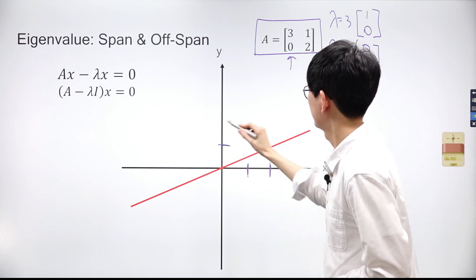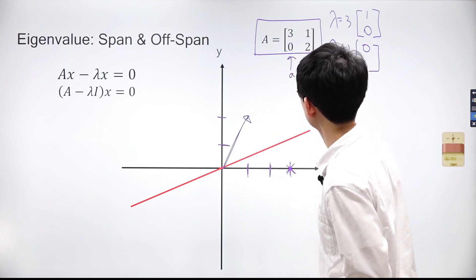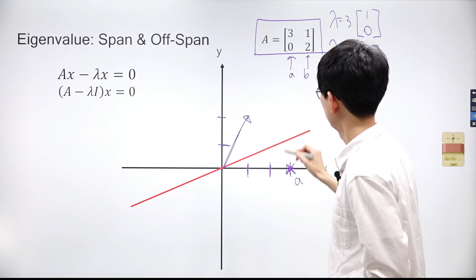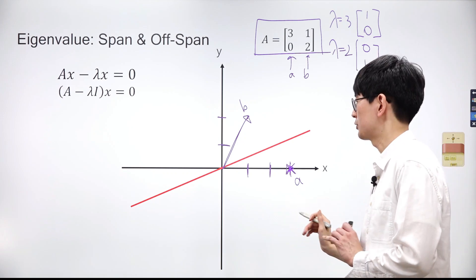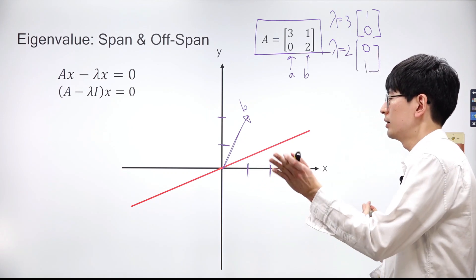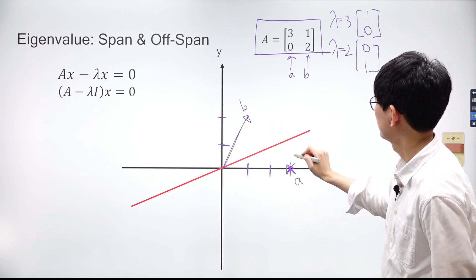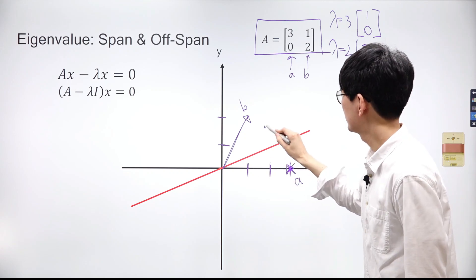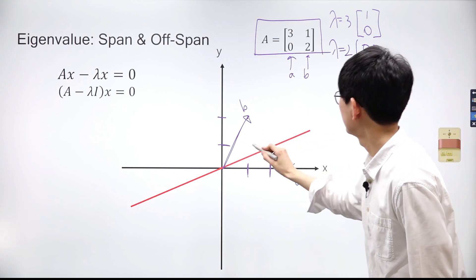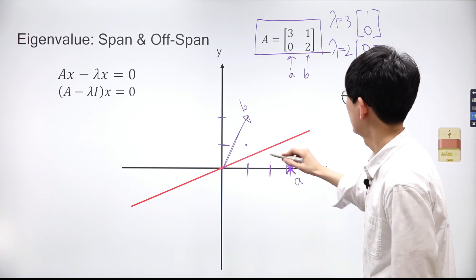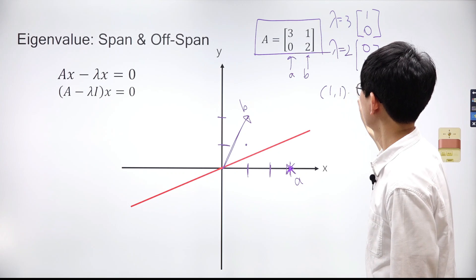What's the geometric interpretation of these values? Let's plot two vectors (3, 0) and (1, 2) on the plane, denoting them as vector A and B. We proceed to transform the current coordinate space with matrix A. Coordinates of arbitrary points on the plane shift to new coordinates. For example, coordinates (1, 1) will be shifted to (4, 2). We can determine the new coordinates through matrix-vector multiplication.